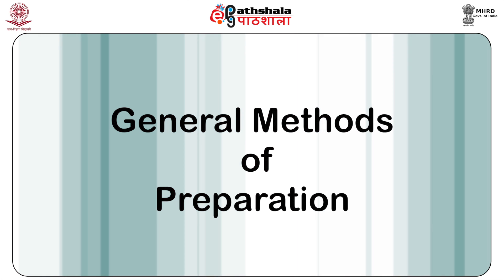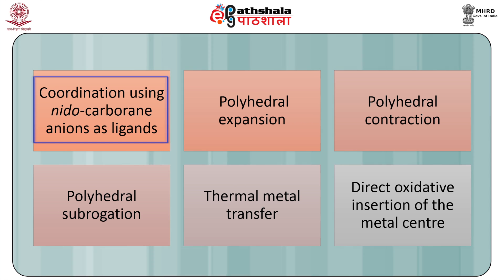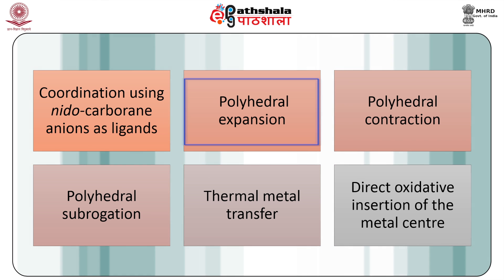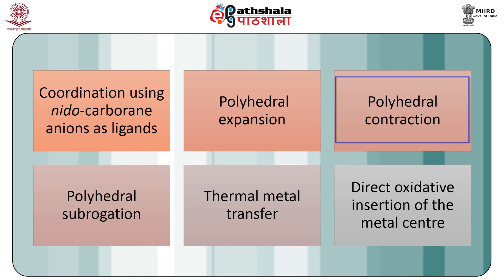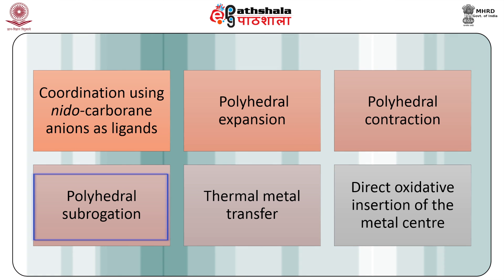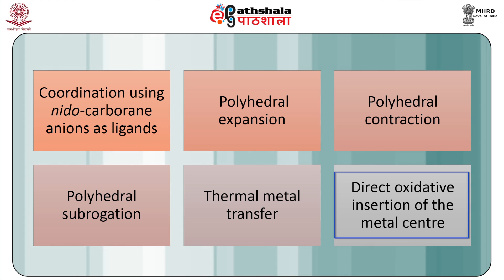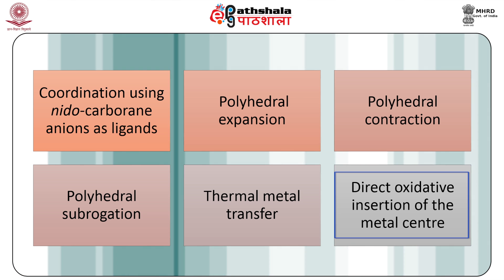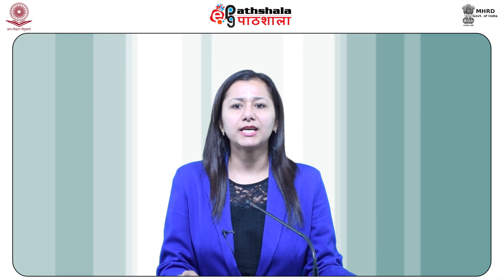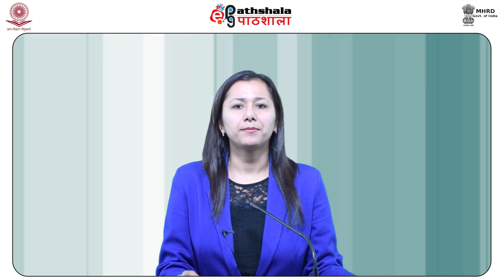The methods of preparation of metallocarburanes are enormous. The 6 major synthetic methods are: (1) coordination using nido-carburane anions as ligands, (2) polyhedral expansion, (3) polyhedral contraction, (4) polyhedral subrogation, (5) thermal metal transfer, and (6) direct oxidative insertion of the metal centre. All methods except the last were developed by M.F. Hawthorne and his group in the period 1965 to 1974.